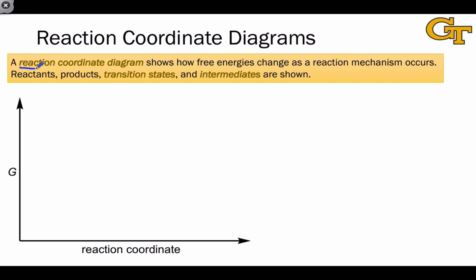We use a tool called a reaction coordinate diagram to document energy changes as a chemical reaction occurs. For a spontaneous reaction, the reactants will be at a higher free energy than the products.